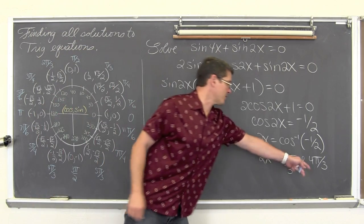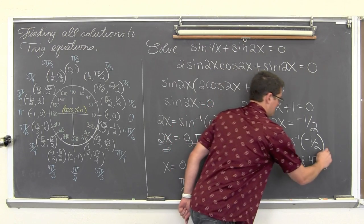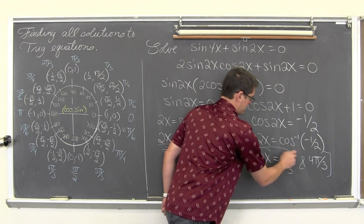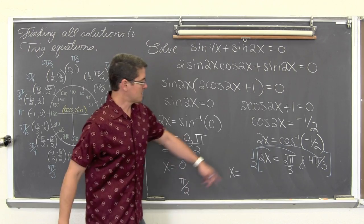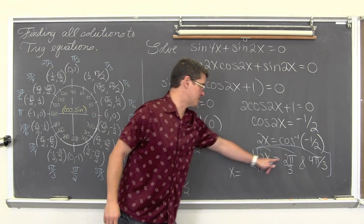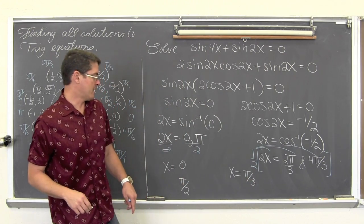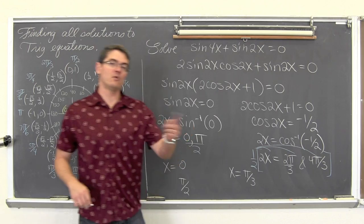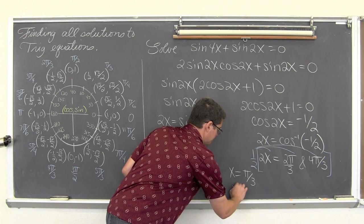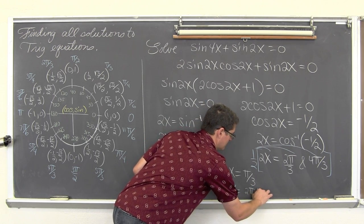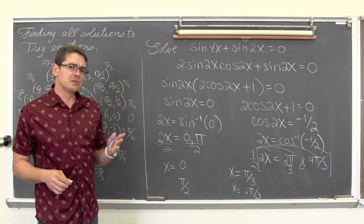Dividing everything by 2 on the other side — or multiplying by 1 half since we have fractions — we get 2 times 1 half is simply x, and 1 half times 2 thirds: the 2's cancel giving pi over 3. And 1 half times 4 over 3: 4 divided by 2 is 2, so we get x equals 2pi over 3. So we have our four solutions.